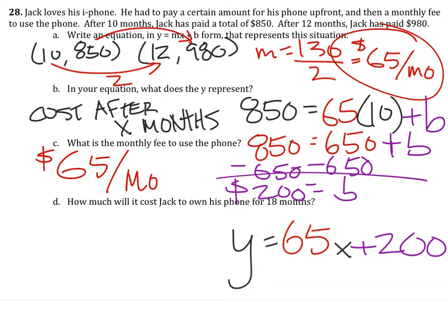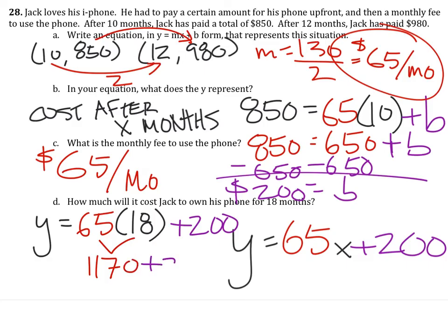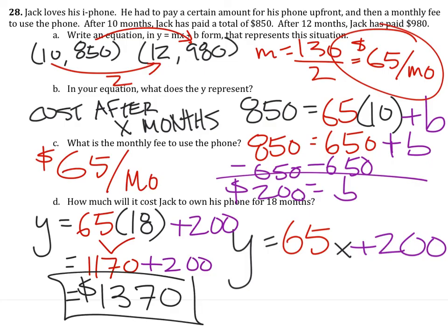How much will it cost Jack to own his phone for 18 months? So we're going to use the equation again, where we know now that x is going to be for 18 months, plus the $200. So that would tell us 65 times 18 is $1,170, plus the initial $200. And that tells us the cost of this thing would be $1,370. Make sure you label that. So it's $1,370 after 18 months.